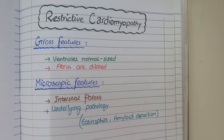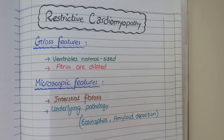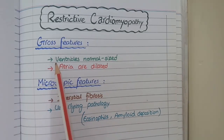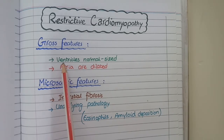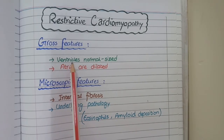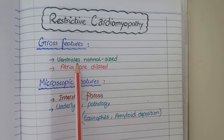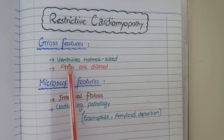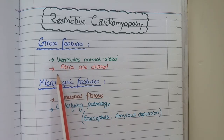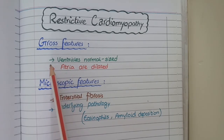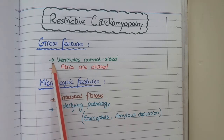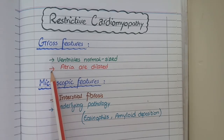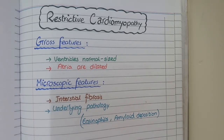In restrictive cardiomyopathy, there is restriction to the filling of ventricles. The structure of the ventricles is unaffected, but as ventricles are restricted from receiving blood from the atria, the atria become dilated. So in restrictive cardiomyopathy, you see normal-sized ventricles and dilated atria.